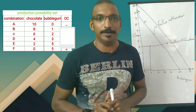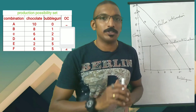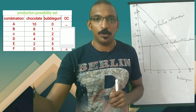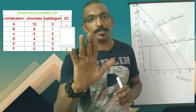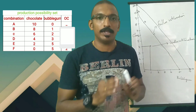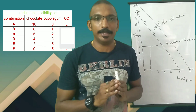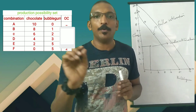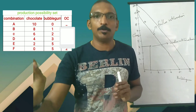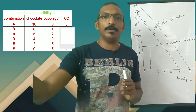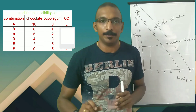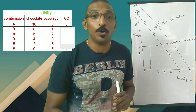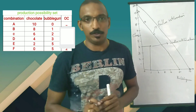Opportunity cost. Opportunity cost is the next best alternative forgone when we make a choice. In our example, we have one additional bubble gum. When we get that, the chocolate given up is the opportunity cost.